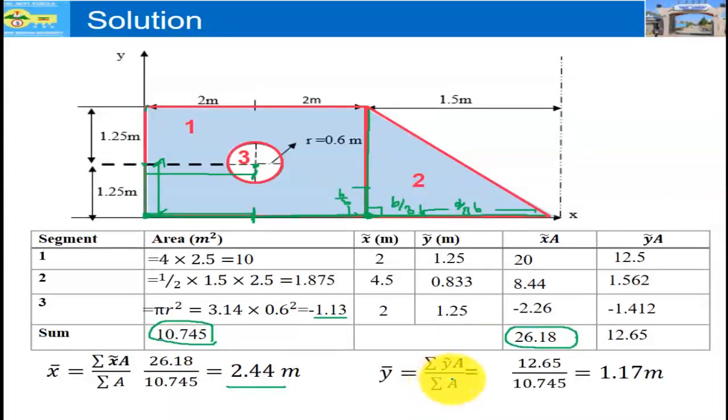Y bar is equal to summation of y tilde times area divided by summation of area. Summation of y tilde times area is 12.65 divided by summation of area 10.745, and this is 1.17 meter. We can calculate any centroid of composite body using this procedure. Thank you for watching.